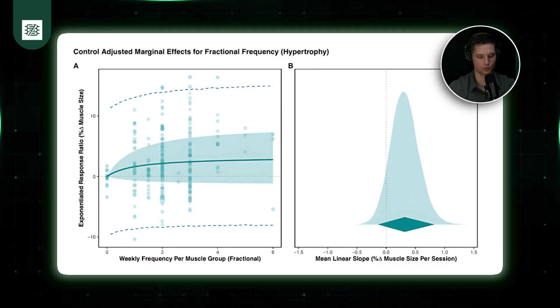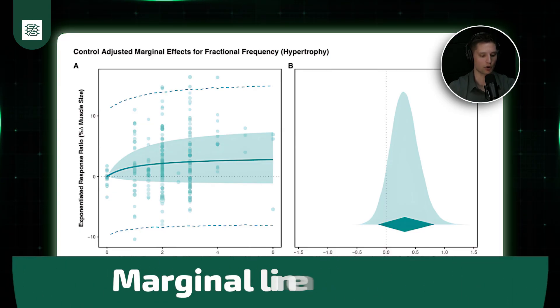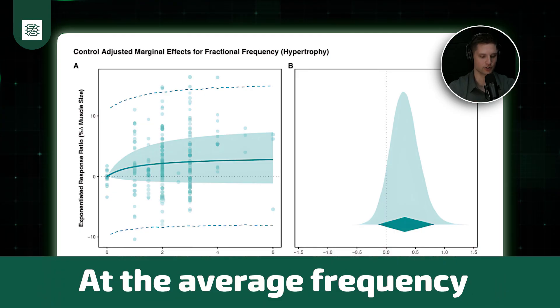So ultimately what we see here is not a super strong effect. But let's add a little bit of color to that. The way that you put some numbers on a meta-regression like this is to look at the slope of the relationship. Specifically, in this case, for a non-linear dose-response relationship, what we did is we looked at the marginal slope. So the marginal linear slope at the average frequency.